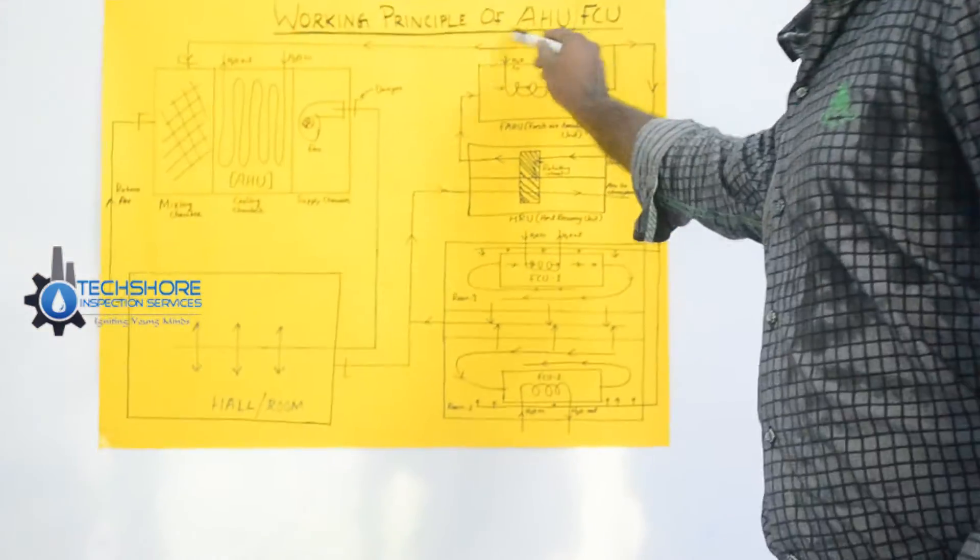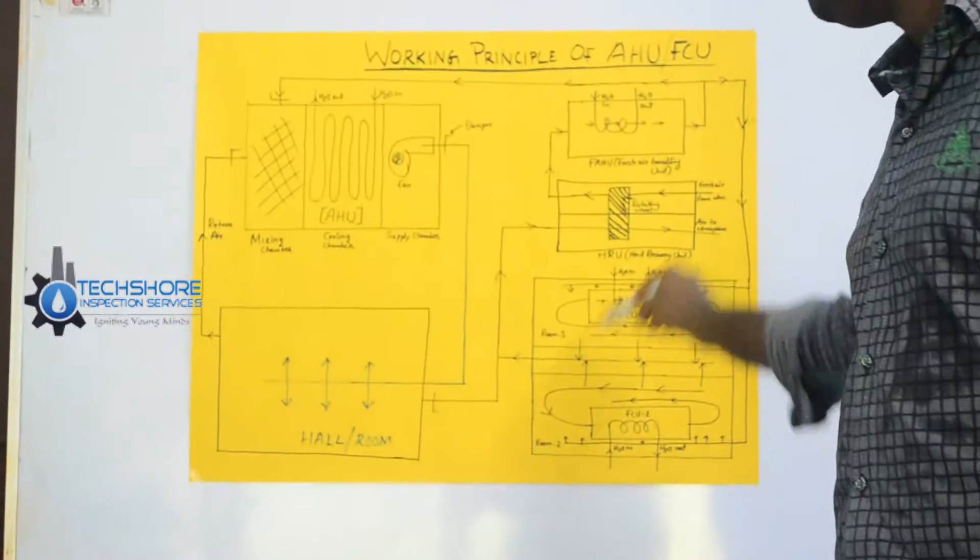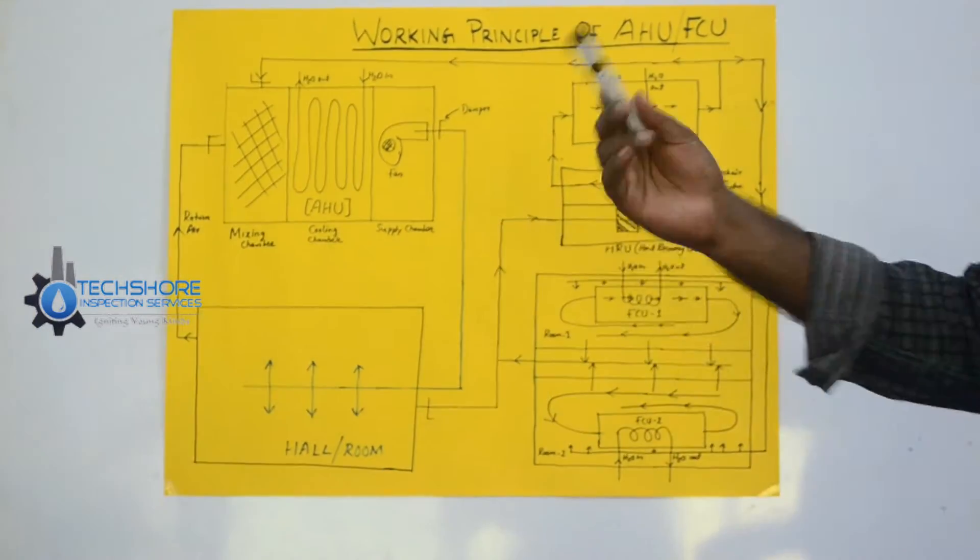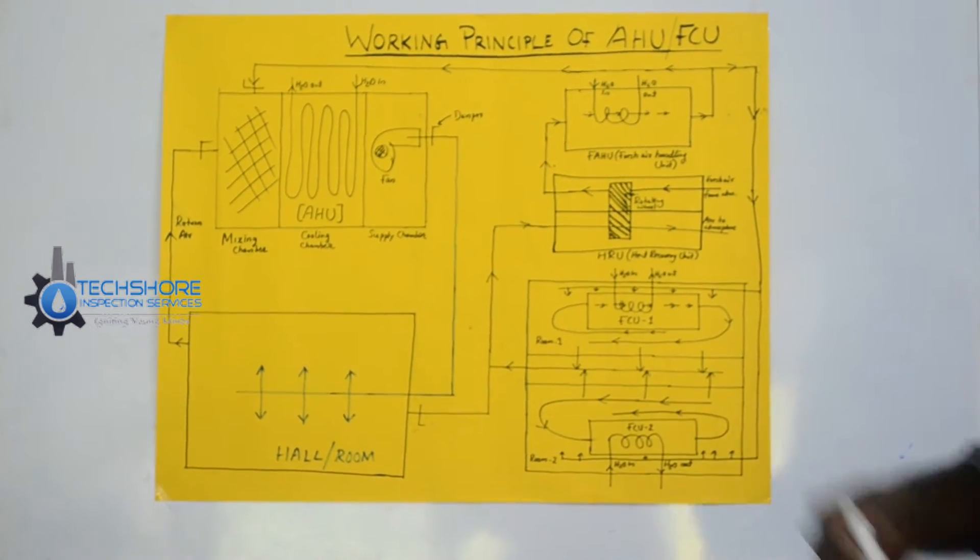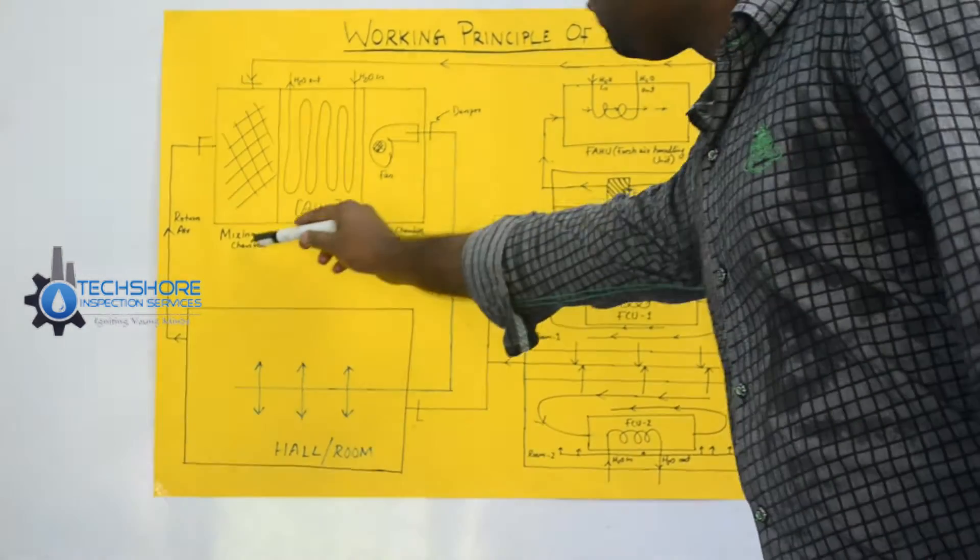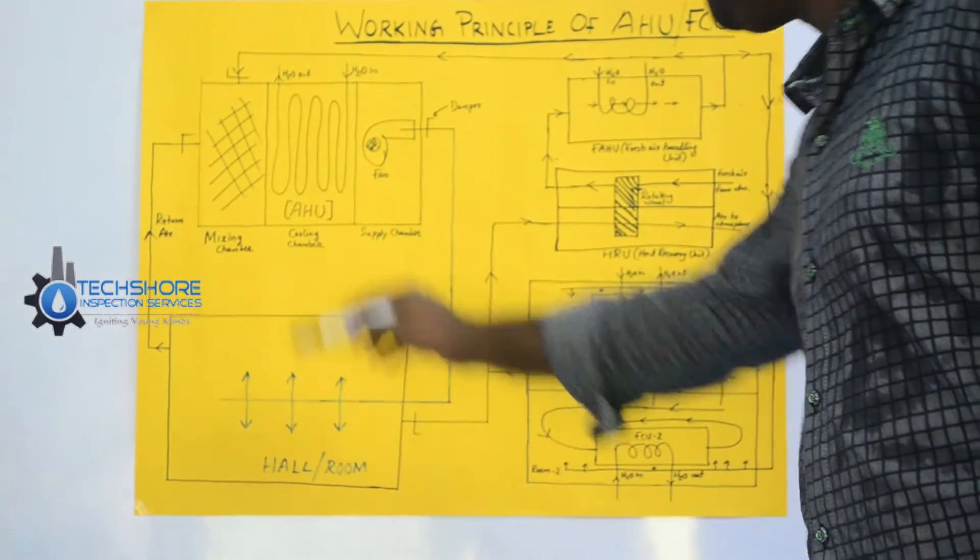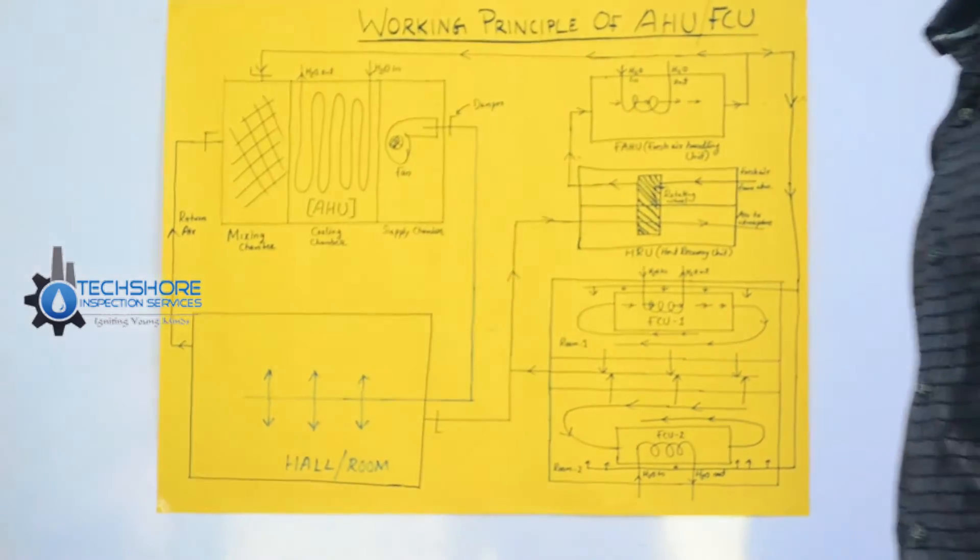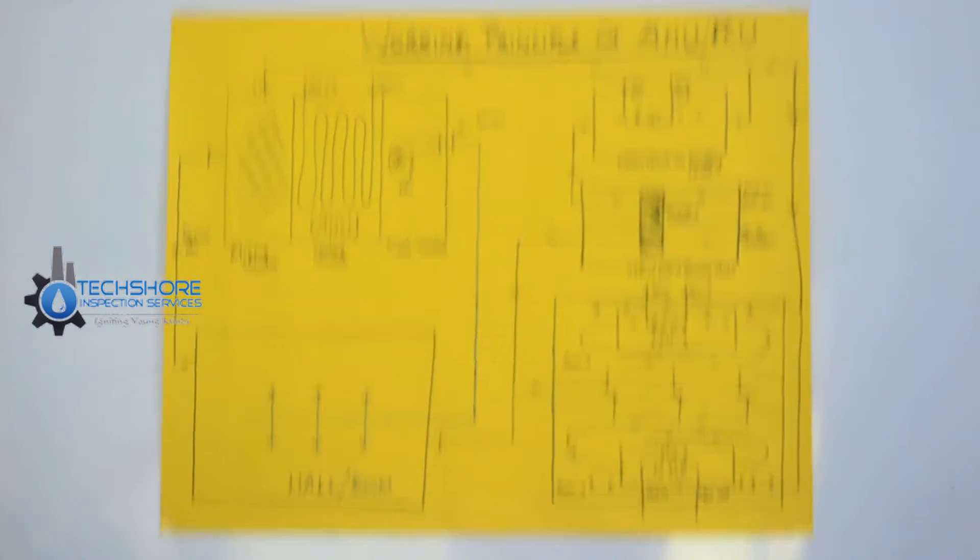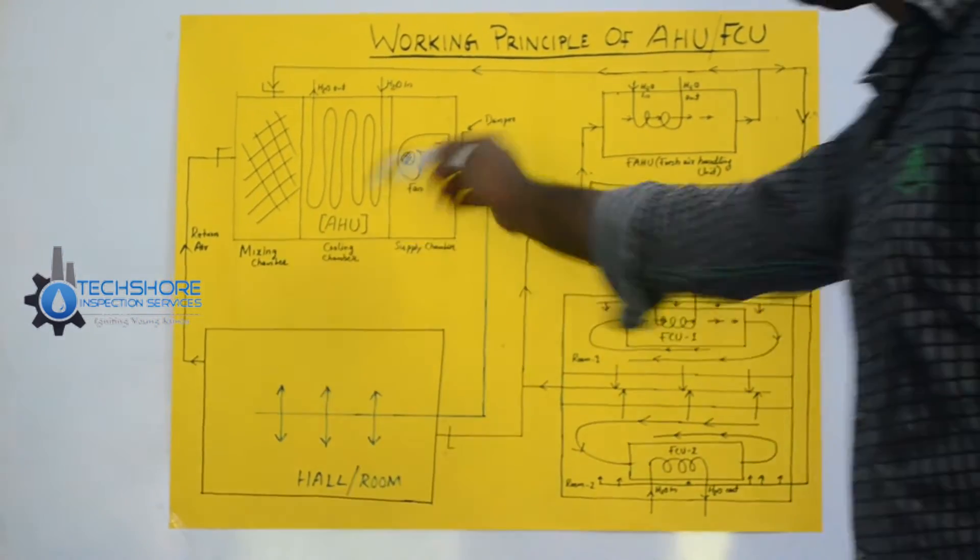Here consists of this AHU. I will explain this AHU and FCU. AHU is generally put outside of the room, that may be in the terrace or somewhere else. Here consists of three chambers. For example, one is a mixing chamber, one is a cooling chamber and a supply chamber. These three chambers are there. Initial setup is showing in this figure.